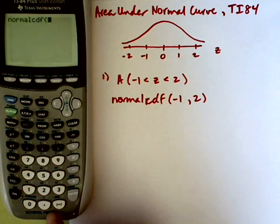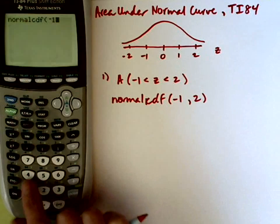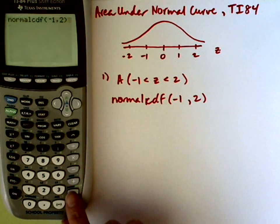So I'm going to type in negative 1 using the negative at the bottom. So negative 1, comma's above the 7, 2, enter.